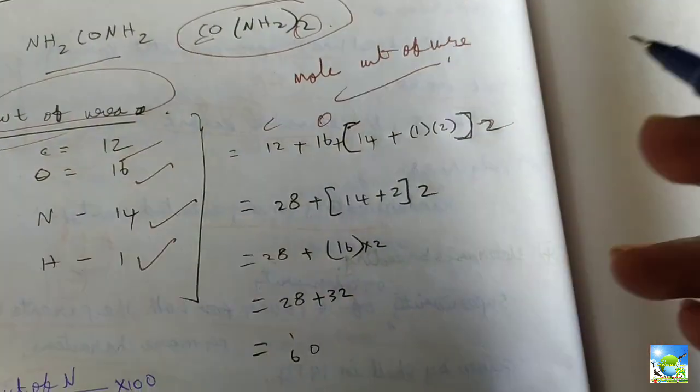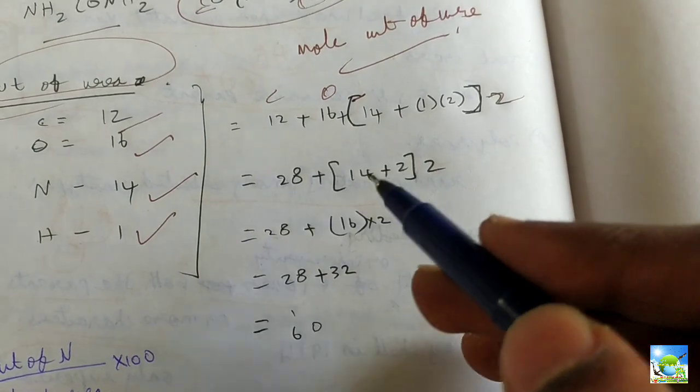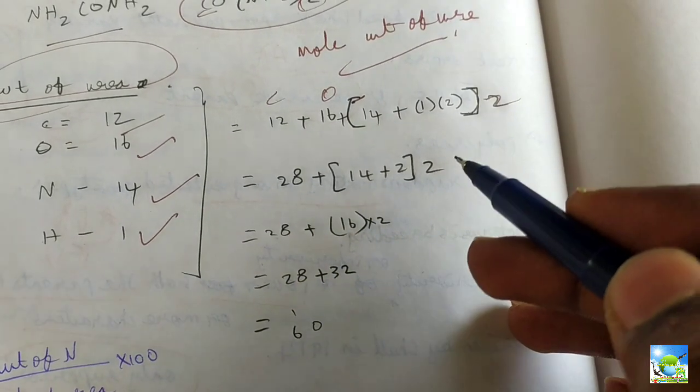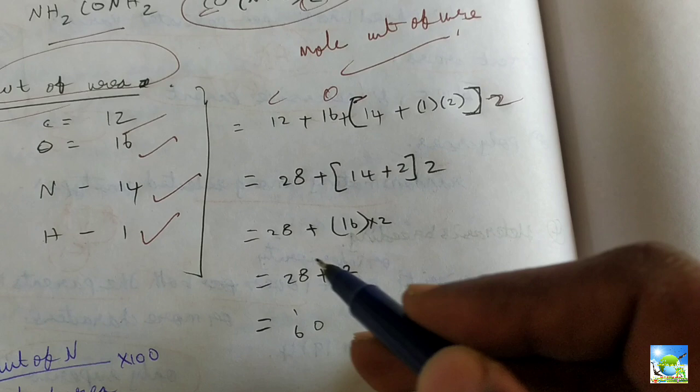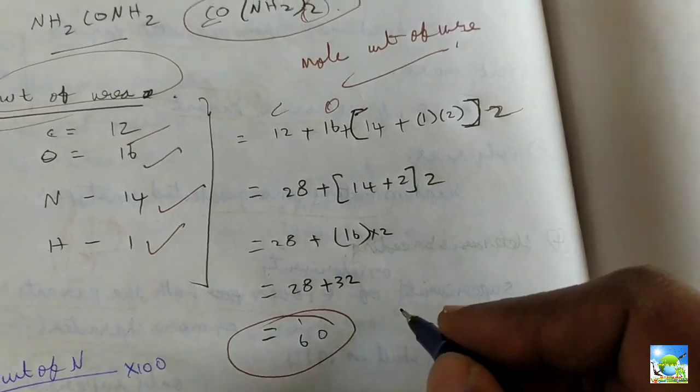Finally, when we simplify this one, 28 plus 14 plus 2 into 2. When we simplify, we will get 60. This is the molecular weight of urea. The molecular weight of urea is 60.